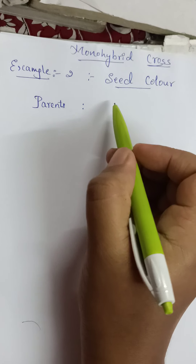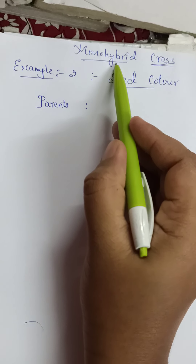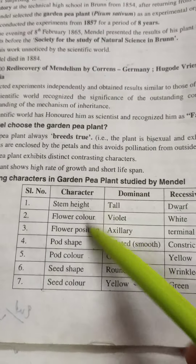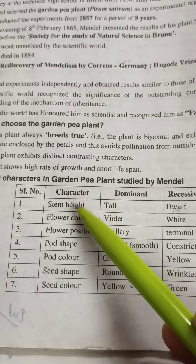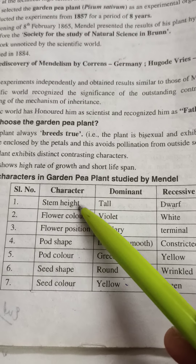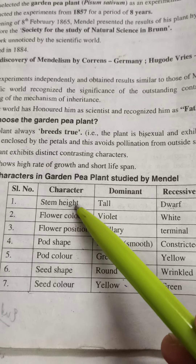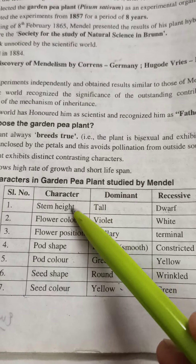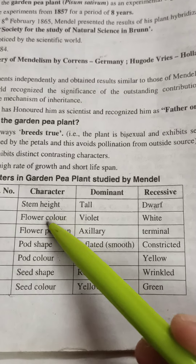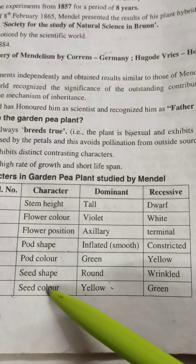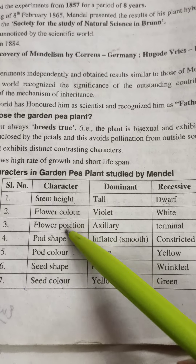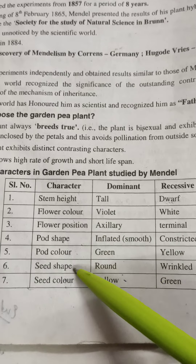Good morning everyone. Previously we studied one of the examples for monohybrid cross. Out of the seven contrasting characteristic features, we can take any one character for doing monohybrid cross. In the first example, we took stem height as a character and crossed tall and dwarf pea plants. Now I'll do seed color.